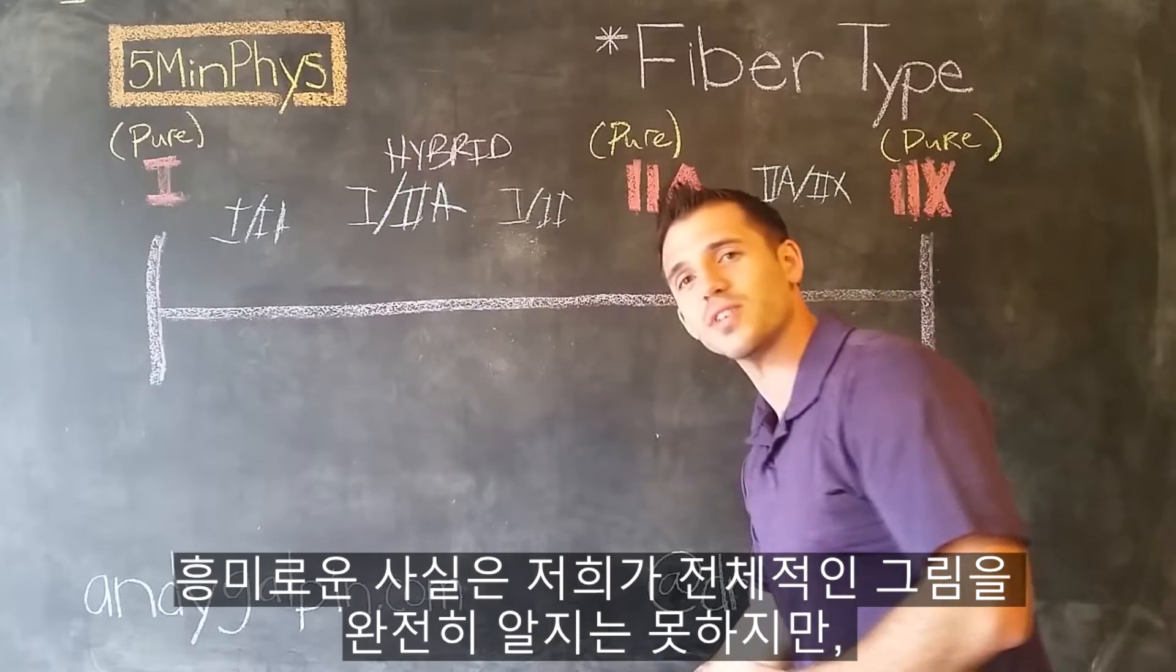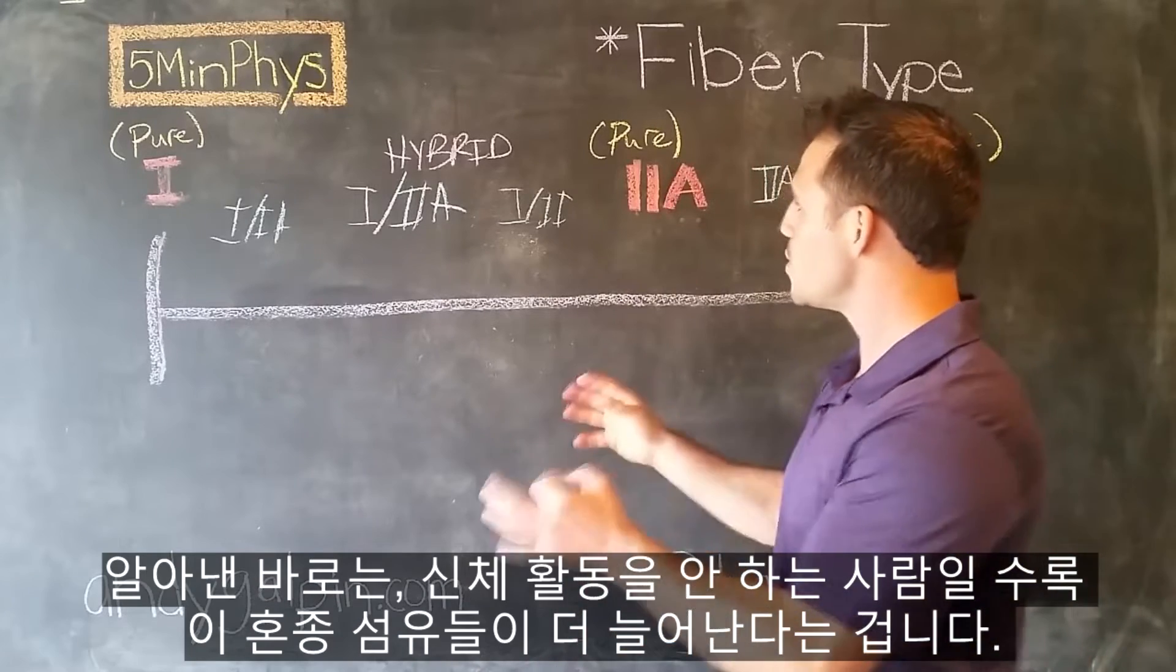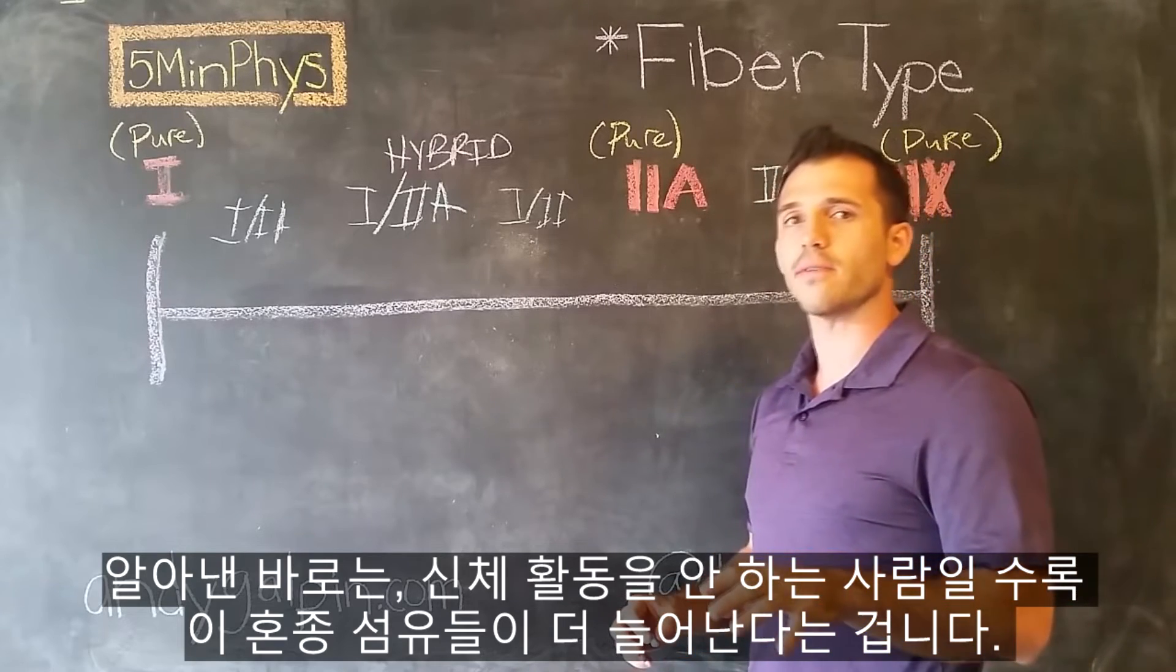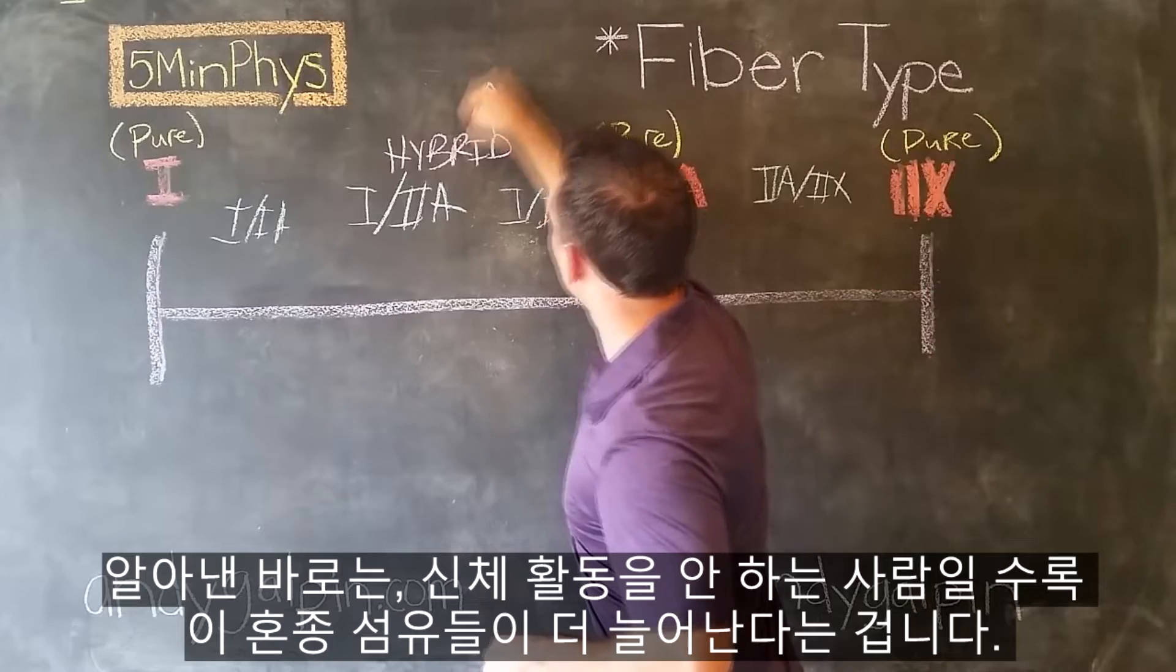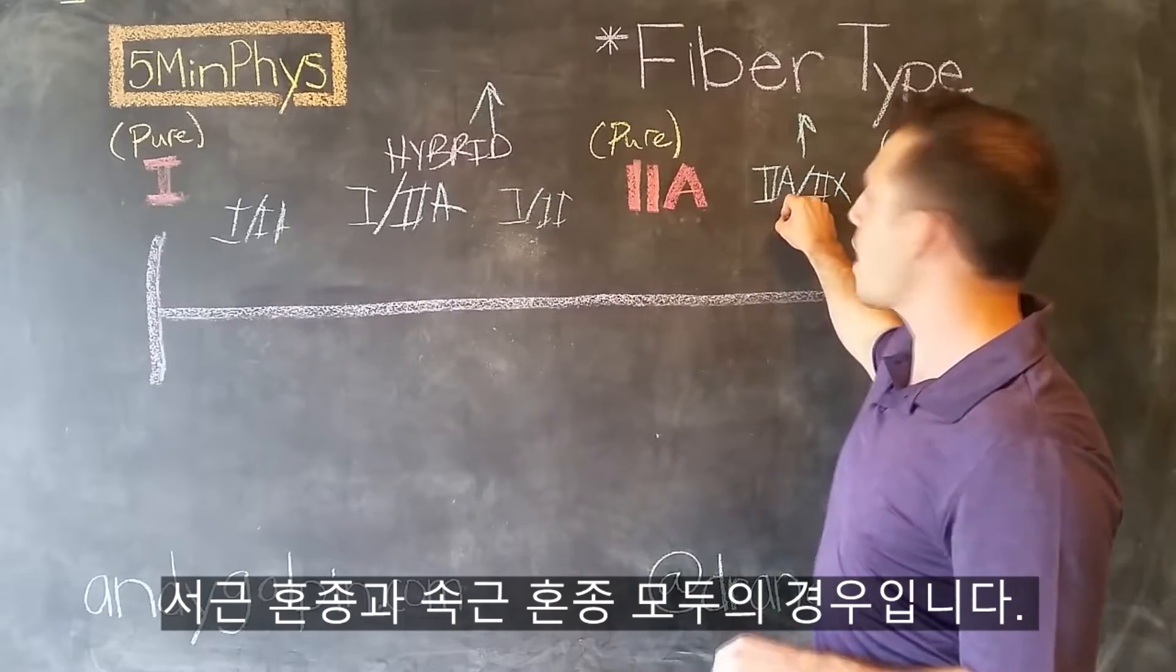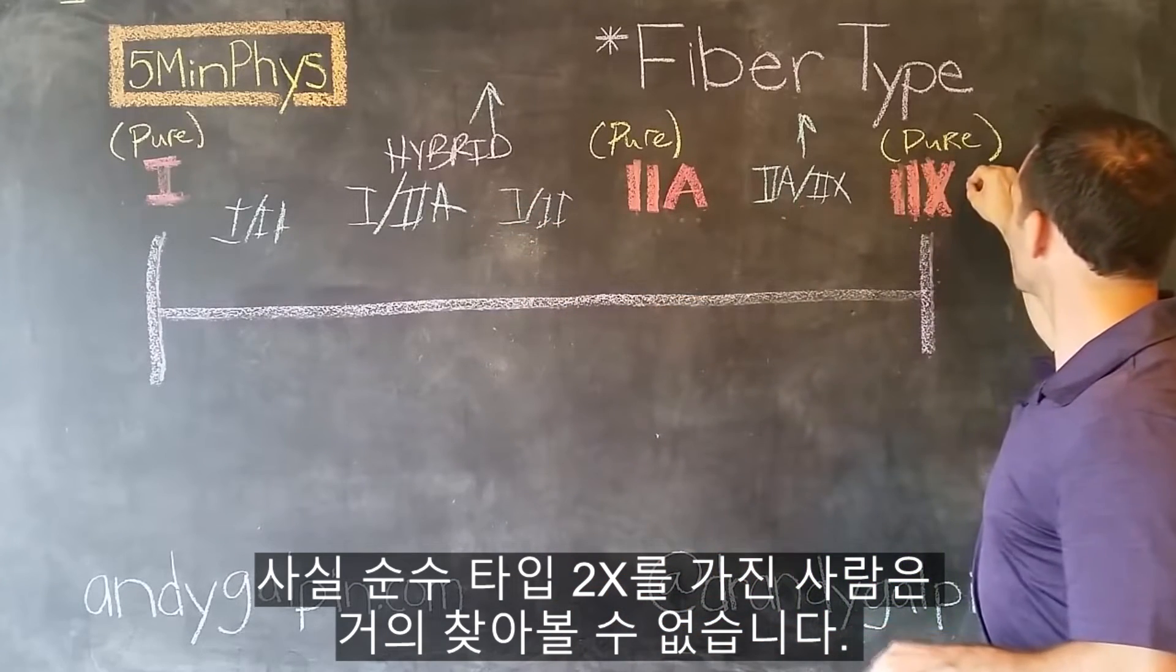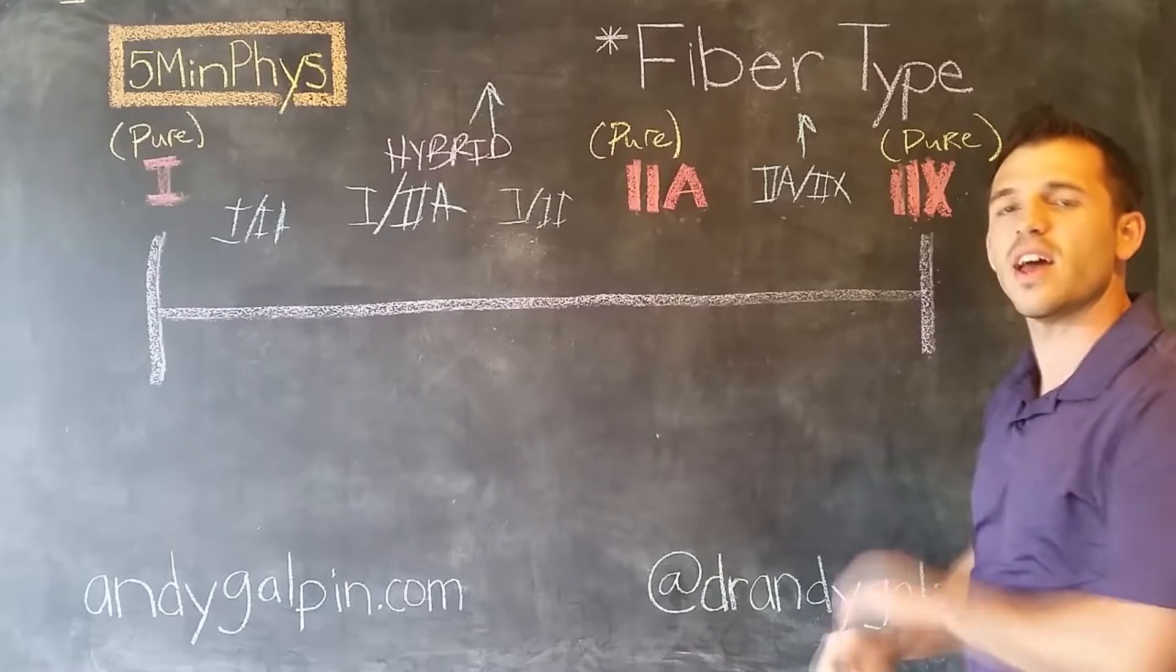Now where this gets really interesting is, the more sedentary or inactive you are with your physical activity, the more of these hybrid fibers you get. In both cases, hybrid fast, hybrid slow. In fact, what we see happen is, we almost never see people have these pure 2Xs. Almost ever.